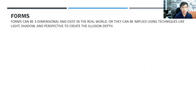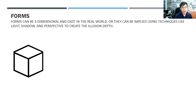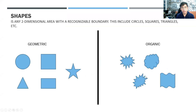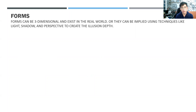Forms can be three-dimensional and exist in the real world, or they can be implied using techniques like light, shadow, and perspective to create the illusion of depth. A simple 3D shape, when given color and shadow, becomes more alive. When we add shadow or light to a plain shape, it gains depth and offset — it transforms from a plain shape into something that feels real through the illusion created by forms.